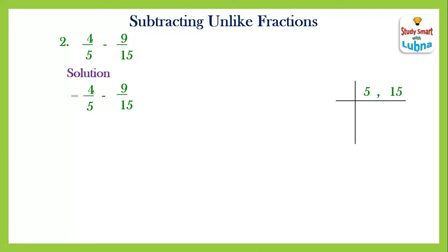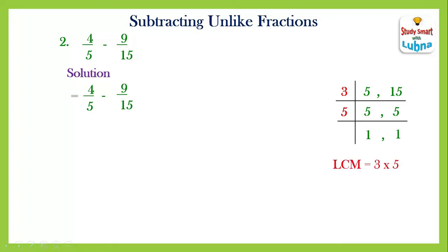Five and fifteen are both odd numbers, so they are not divisible by two. We start dividing by three: five stays as five, and fifteen divided by three equals five. Now we divide five and five by five: five divided by five equals one, and five divided by five equals one. The prime factors are three and five. Multiplying them: three times five equals fifteen. So the LCM of five and fifteen is fifteen.